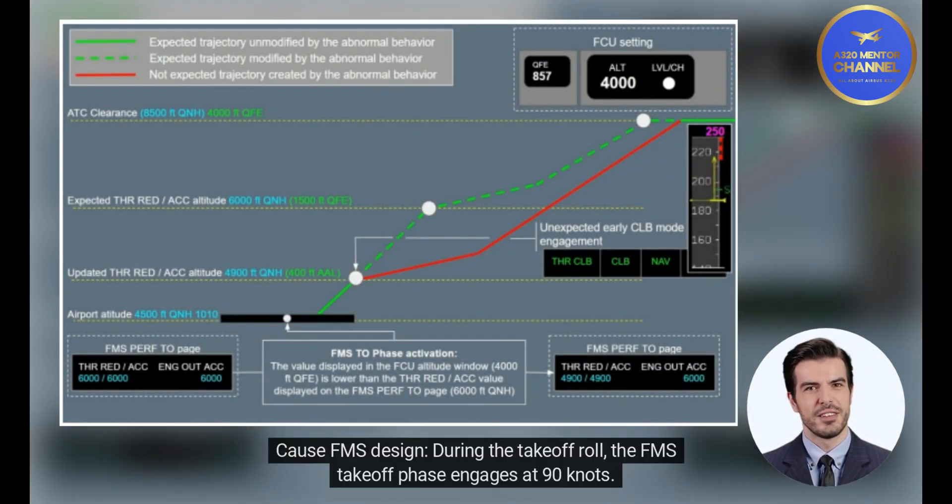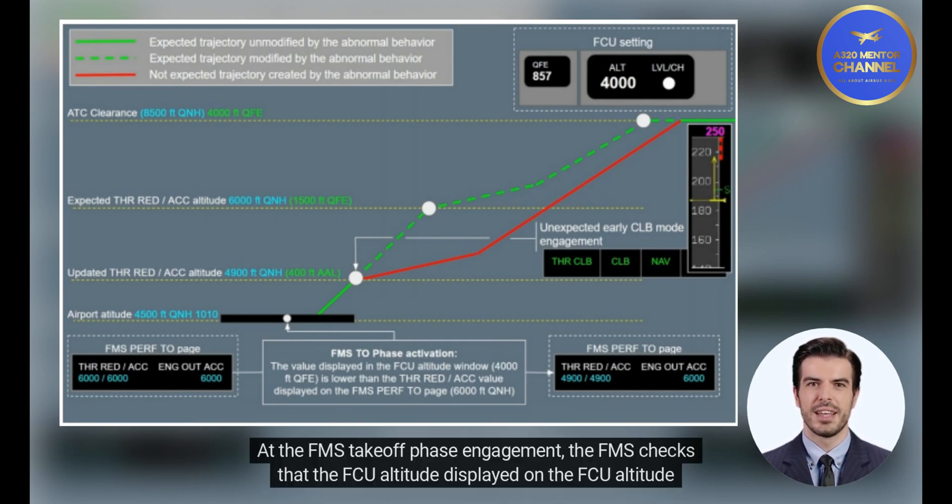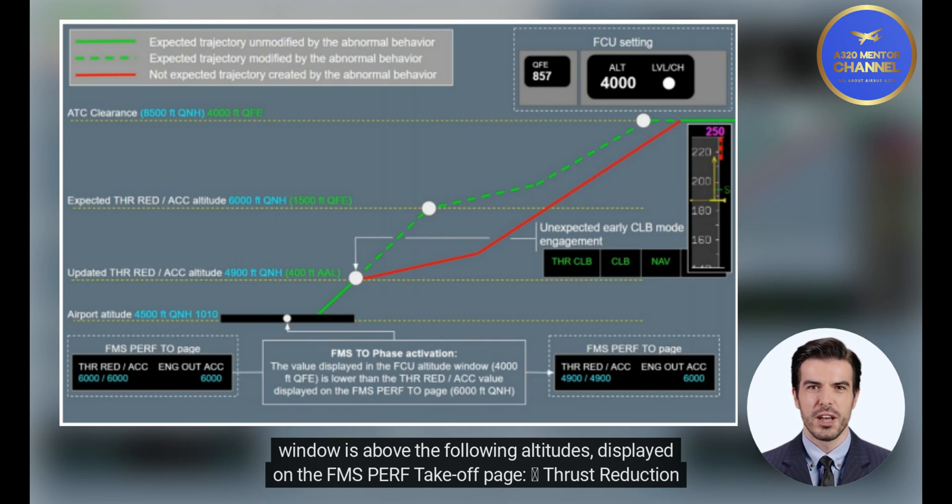Consequences. Because of FMS design, during the takeoff roll, the FMS takeoff phase engages at 90 knots. At the FMS takeoff phase engagement, the FMS checks that the FCU altitude displayed on the FCU altitude window is above the following altitudes.